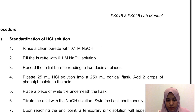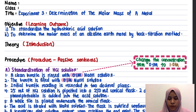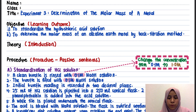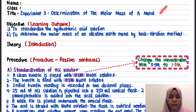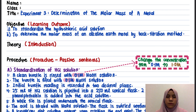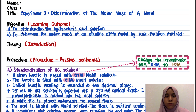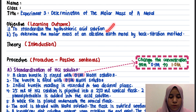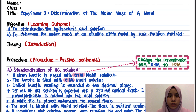In your lab report, you should have your name, class, and title. Next is your objective, which is based on the learning outcome from your lab manual — just slightly changed. The objective is to standardize the hydrochloric acid solution and to determine the molar mass of an alkaline earth metal by the back titration method.